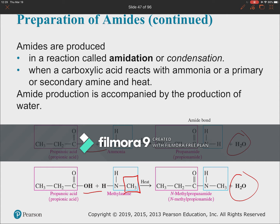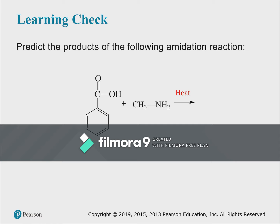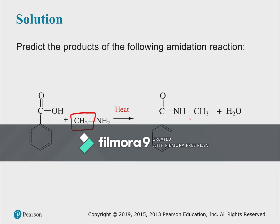In the amidation reaction, whatever is attached to the nitrogen stays attached. For example, benzoic acid reacting with methylamine forms N-methylbenzamide, a benzamide. The methyl group that was on the nitrogen before is still there in the product. You can practice naming these — this would be N-methylbenzamide.